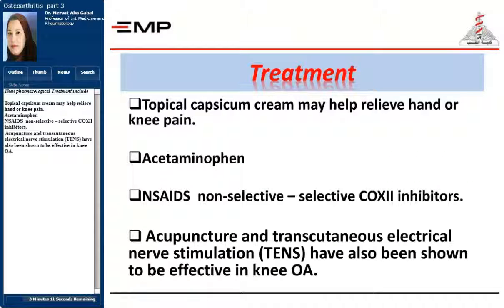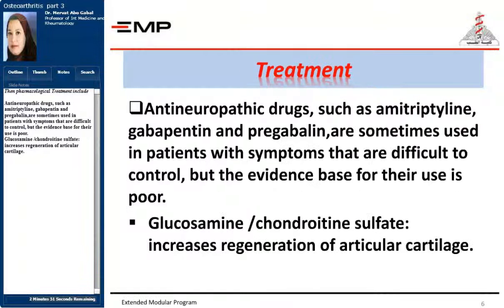Pharmacological treatment includes topical capsicum cream, which may help relieve hand or knee pain, acetaminophen, non-steroidal anti-inflammatories whether non-selective or selective COX-2 inhibitors. Acupuncture and transcutaneous electric nerve stimulation may also have a role.